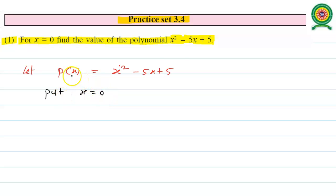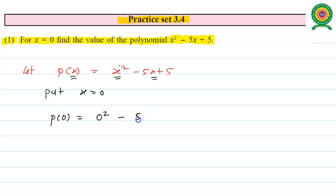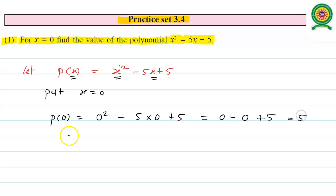We have to find the value of the polynomial for x equal to 0. Put x equals 0 in the given polynomial P(x), meaning we replace all x from P(x) by 0. So P(0) equals 0² minus 5 times 0 plus 5. That gives us 0 minus 0 plus 5, which equals 5.